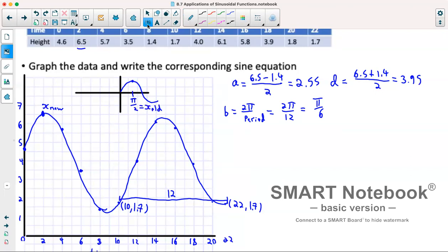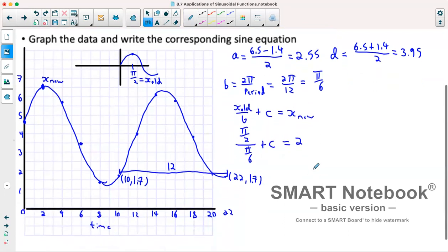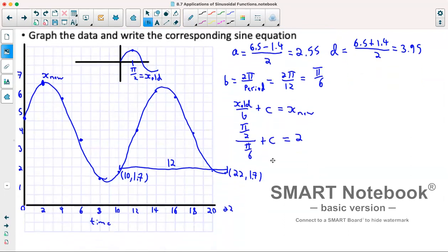Okay, so what's left is getting our c value. So we know from our point equation that if we have x old over b plus c, that gives us our new x. So our old x was π over 2. That's being divided by our b value of π over 6 plus c gives us our new x, which is 2. So that gives us 3 plus c equals 2. So c is equal to negative 1.